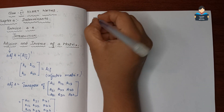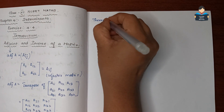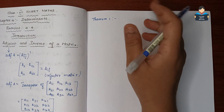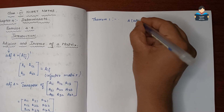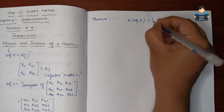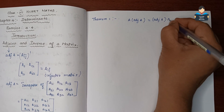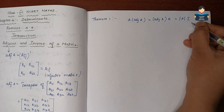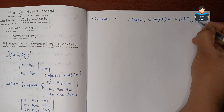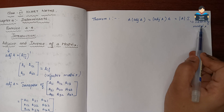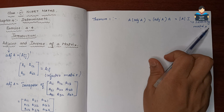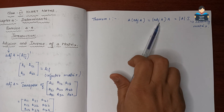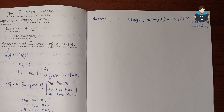Now, Theorem 1: For any square matrix of order n, A into adjoint of A equals adjoint of A into A, which equals the determinant of A multiplied by the identity matrix I of order n. This is the theorem.